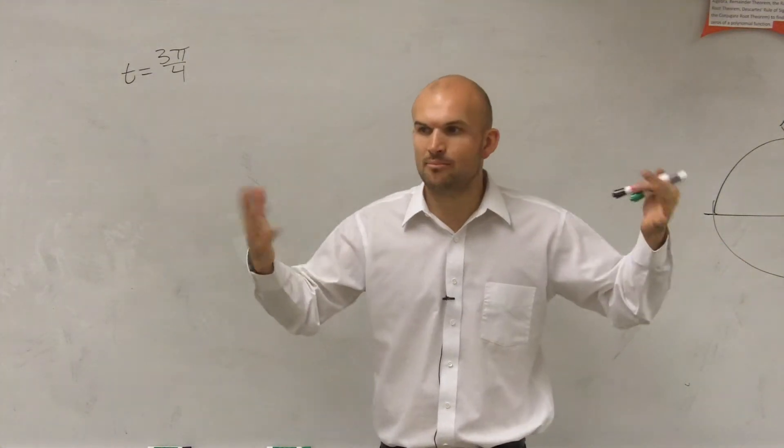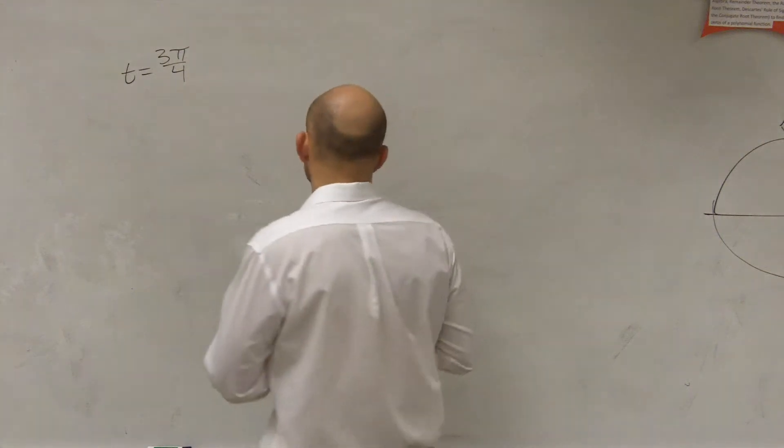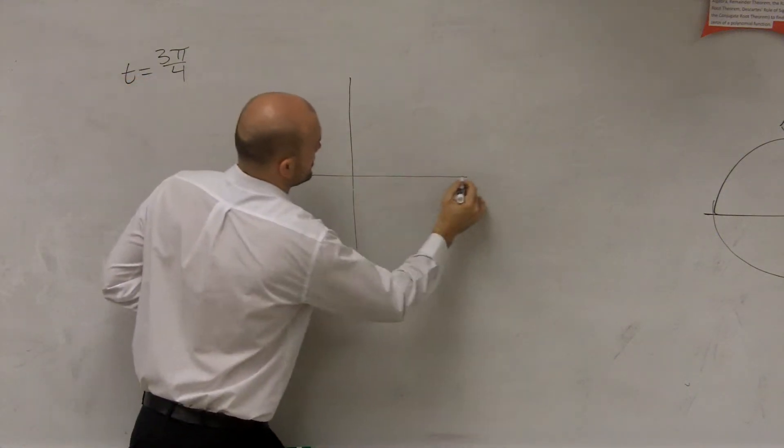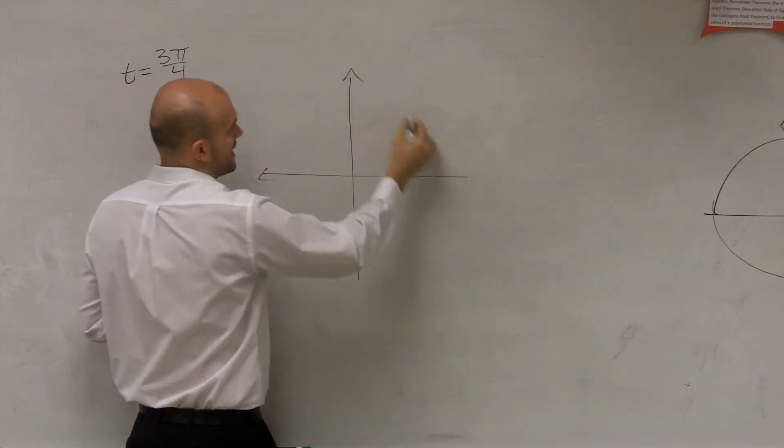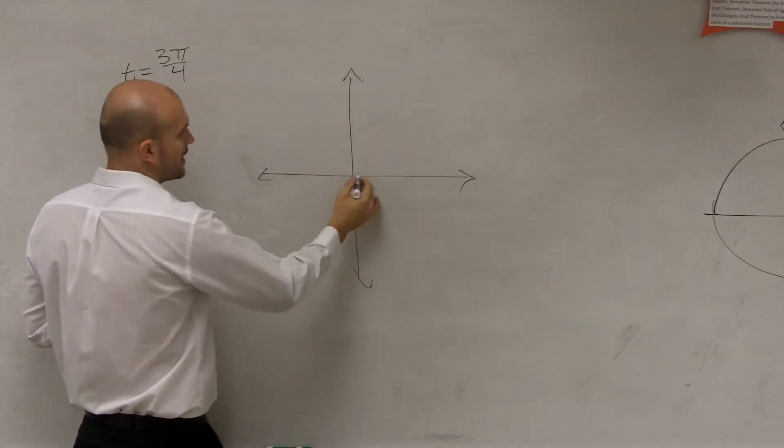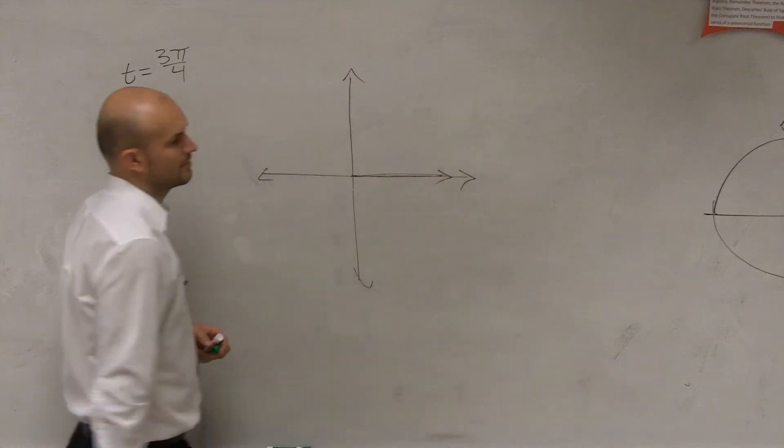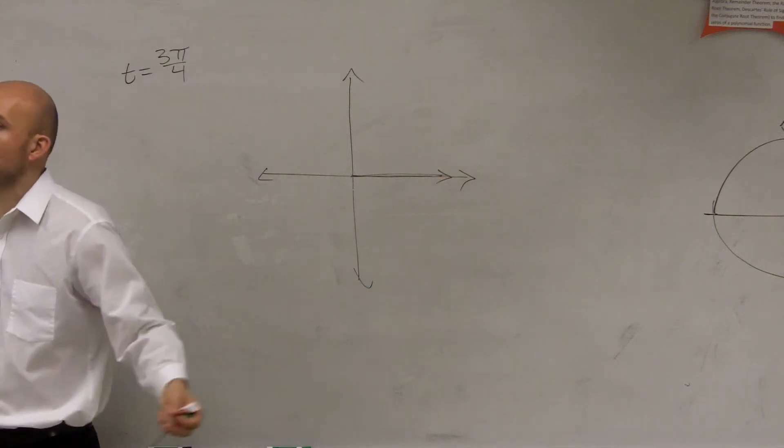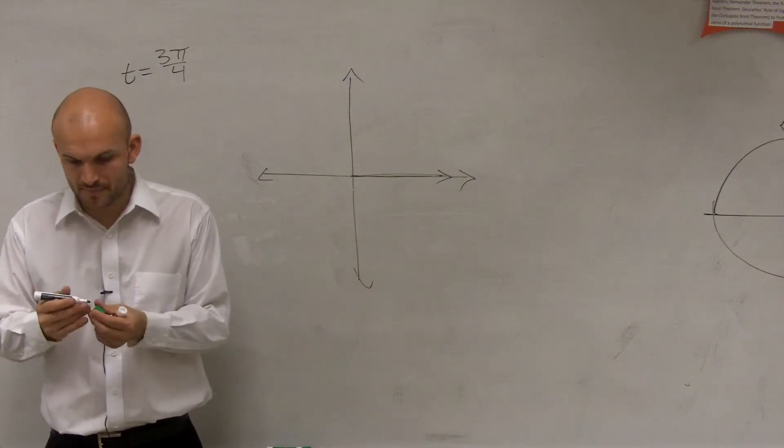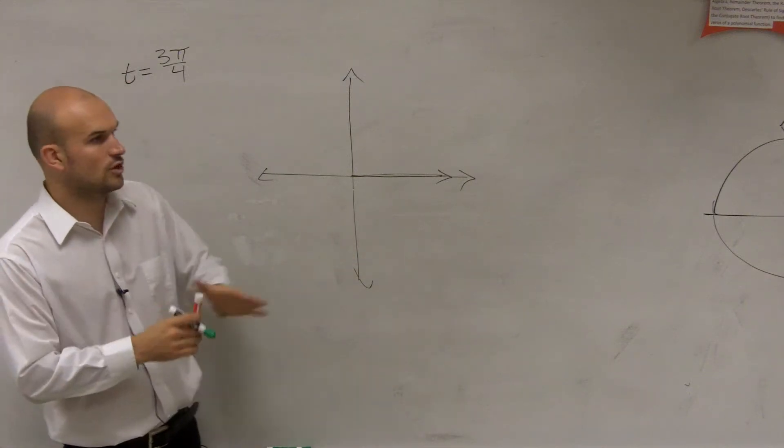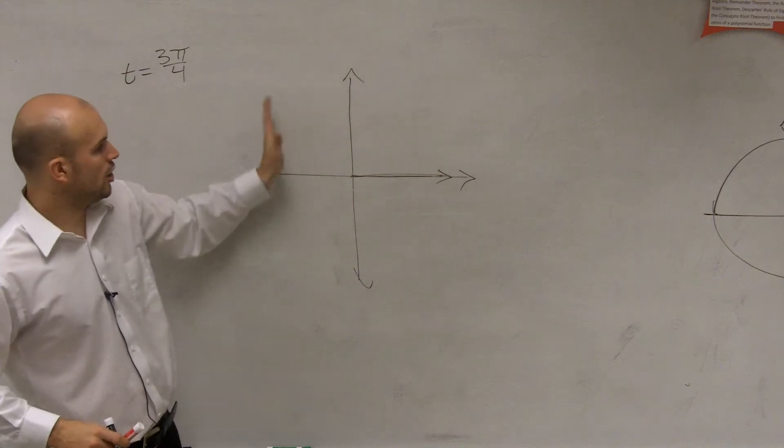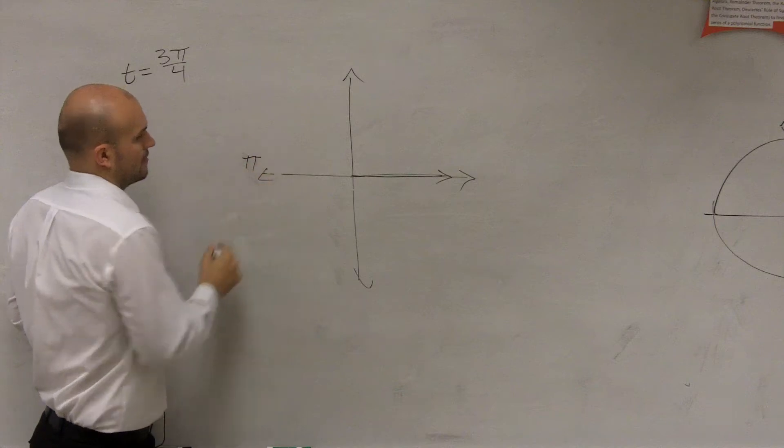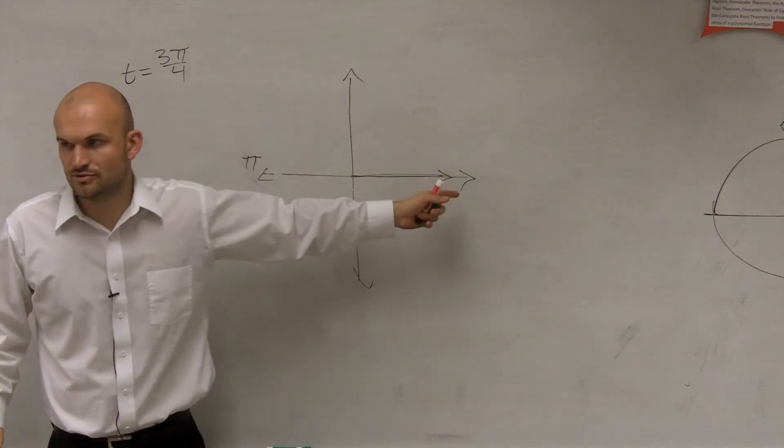So what I'm going to do is I need to graph 3π/4. First, I'm going to create my x and y axes. And remember, we always start right here. That's our initial side, always. We know that if I was to rotate my rays all the way halfway around would be π, and all the way around would be 2π.